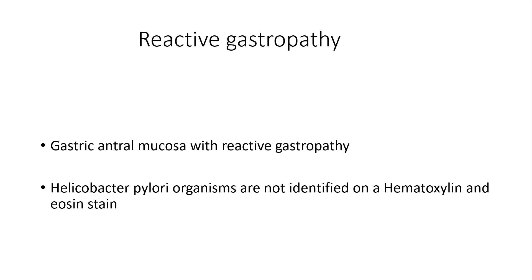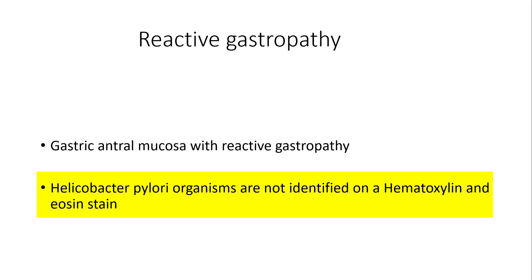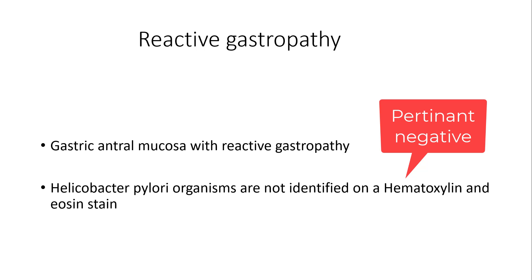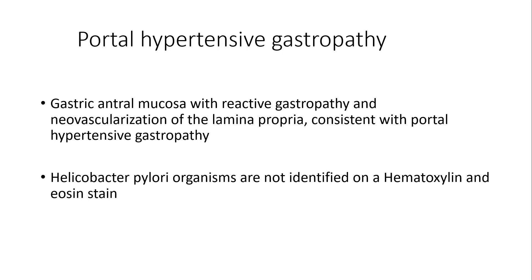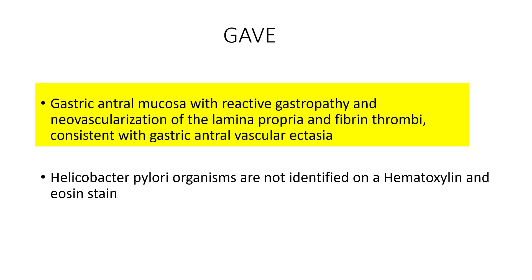A quick word on how I craft my report for reactive gastropathy. I always specify the site biopsied — in this case gastroantral mucosa, or it could be gastric body/fundic mucosa or gastric cardia — and then I state 'with reactive gastropathy.' One additional line I always include: I note that I do not see Helicobacter pylori organisms on hematoxylin and eosin stain. I put that down for the endoscopist because it is one positive take-away from my report. It is actually a negative finding, but it's an important parameter that deserves inclusion. I also describe how I would phrase my portal hypertensive gastropathy report and my gastric antral vascular ectasia report.